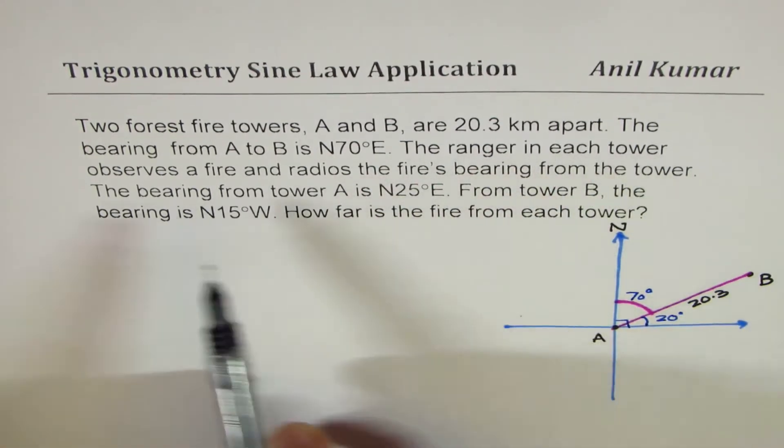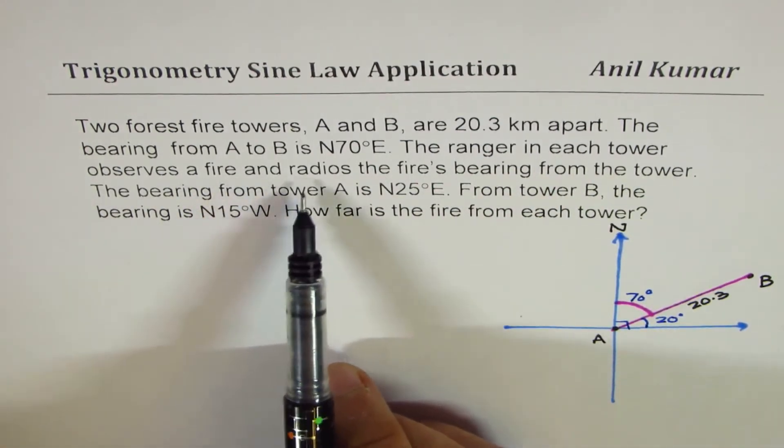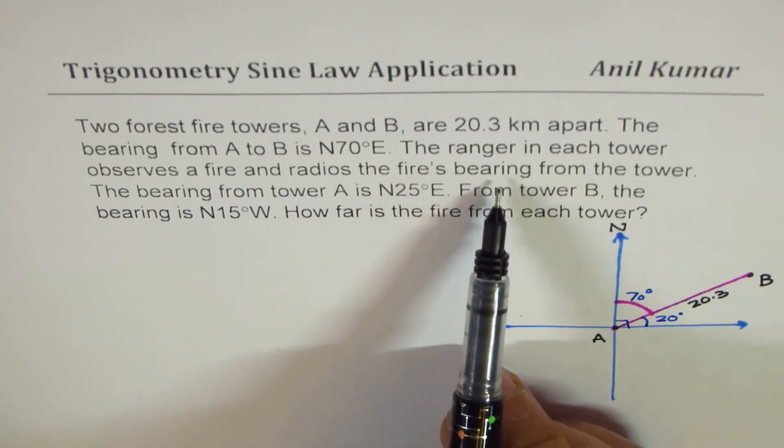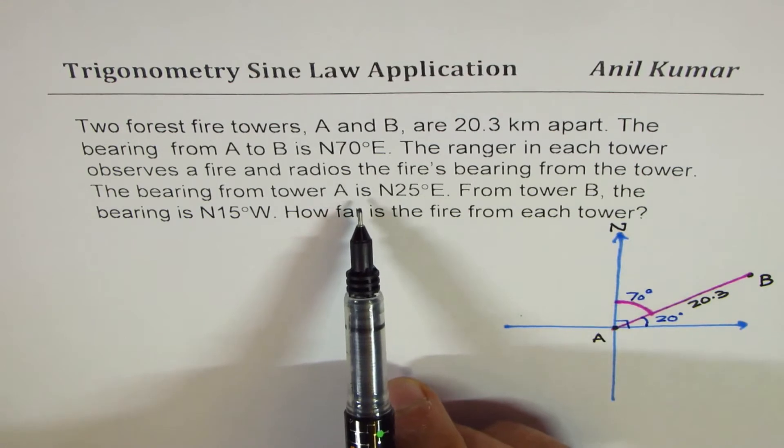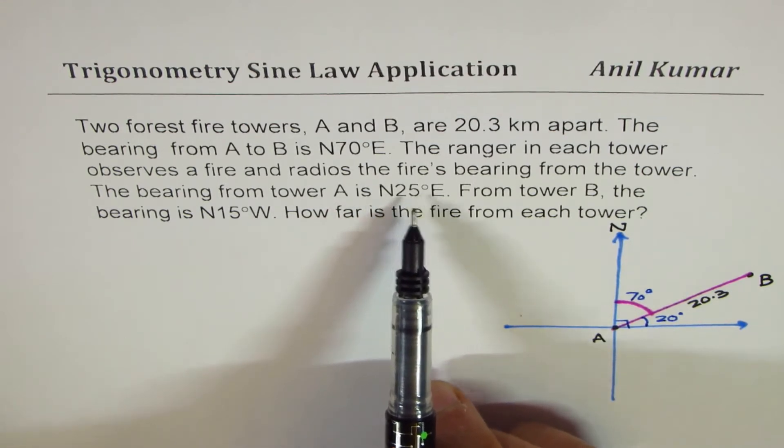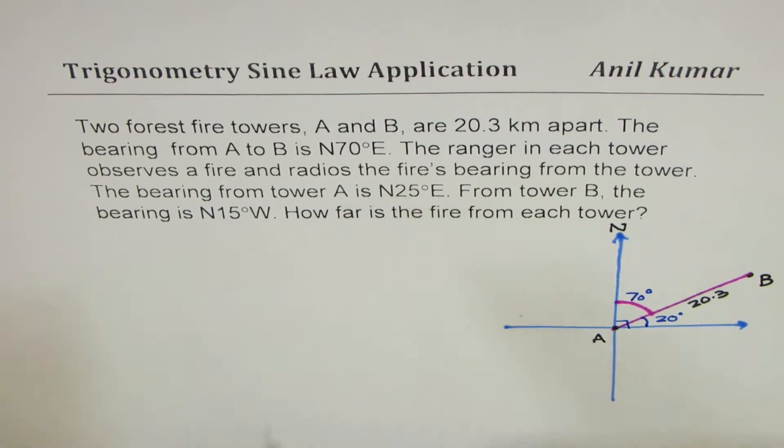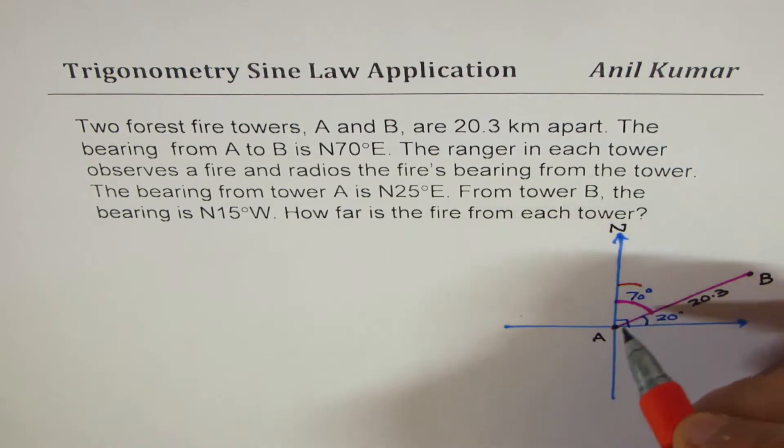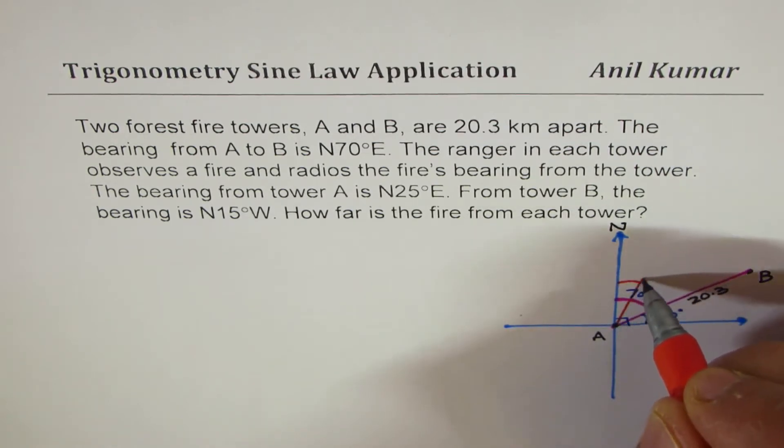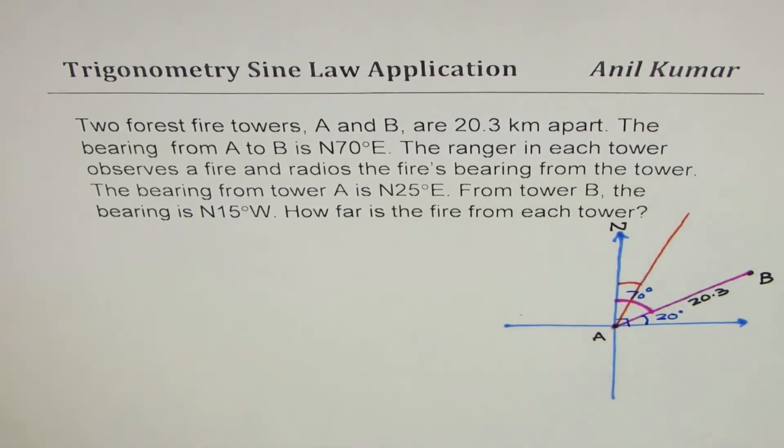The ranger in each tower observes a fire and radios the fire's bearing from the tower. The bearing from tower A is 25 degrees east of north. So when they say 25 degrees east of north, that means let's say that is 25 degrees. So we could draw something like this, 25 degrees east of north.